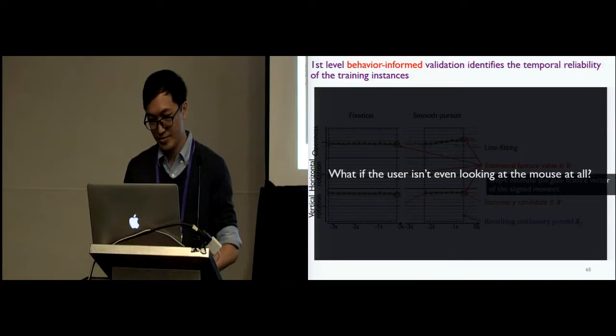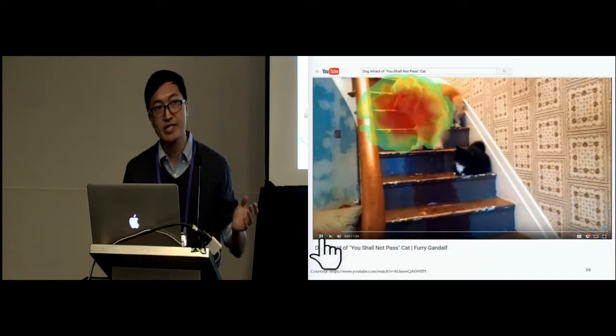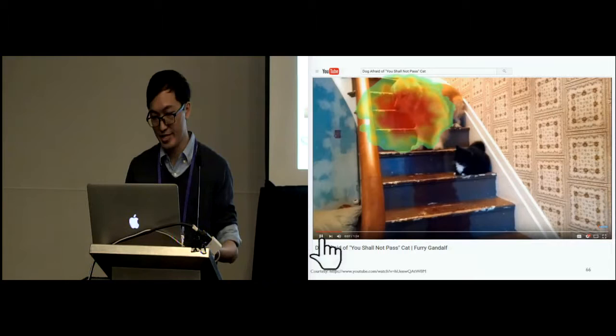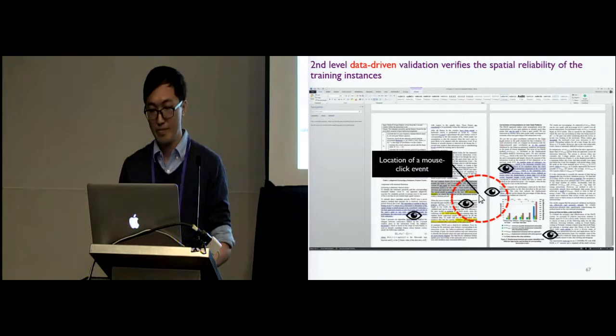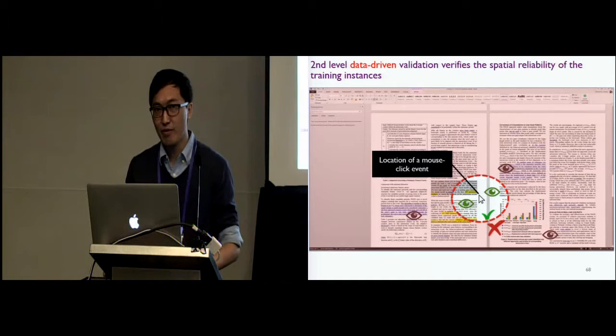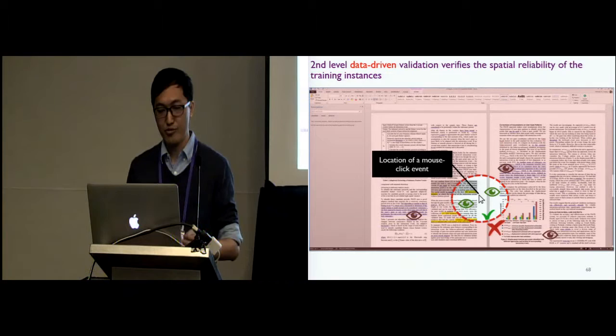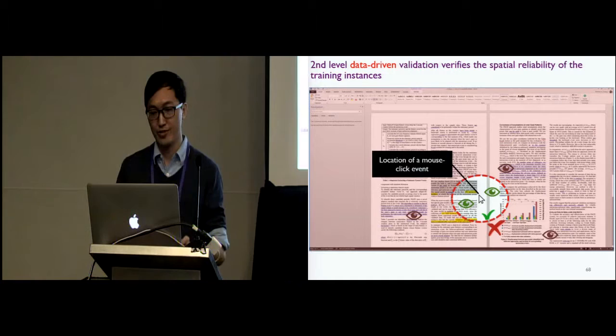But what if the user isn't even looking at the interaction cue at all? Here is an example. The user is watching a YouTube video, and the heat map shows the gaze location. The mouse is positioned on a pause button and tries to capture a screen. Obviously, the mouse target is not in the gaze point. But our behavior-informed validation doesn't know that. We, therefore, add a data-driven validation to adjust this situation by verifying the spatial reliability of the training instances. Using the feature vector extracted by the behavior-informed validation, we can calculate or estimate this predicted gaze point. And if this gaze point is too far from the interaction event, then this instance will be classified as potential bad data, which will not be used to update the next gaze model.